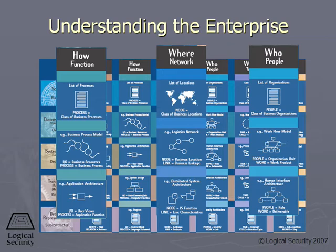Strategic would be senior management — the overall arching understanding of how the company works. Tactical would be the middle, overseeing operations — mid-management. And operational would be the people actually working, like in IT, or carrying out the steps within business processes. The Zachman model goes even deeper than just those three levels, and it's a good model to review.